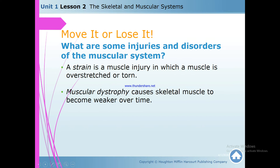Strain is an injury in which a muscle is overstretched or torn — we call that a strain. Muscular dystrophy causes skeletal muscles to become weaker over time; as you age, or due to disease, the muscles get weak.